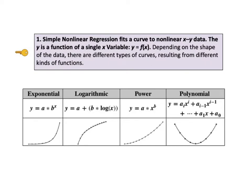KTU number 1 goes on to say, depending on the shape of the data, there are different types of curves resulting from different kinds of functions. The following are the most common types of functions: Exponential, logarithmic, power, and polynomial. Exponential and logarithmic functions have rapid accelerations or decelerations in the slope. Power curves have a more gradual change. And polynomial functions can be used for more complex curves as we will see later.